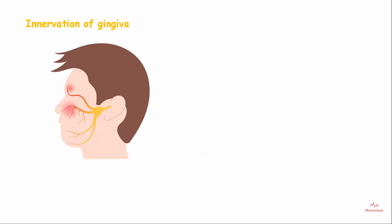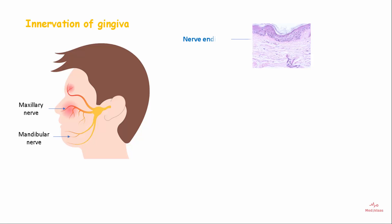The gingiva is supplied by the maxillary and the mandibular branch of the trigeminal nerve. The nerve endings are present in the gingiva and are mainly seen in the connective tissue.